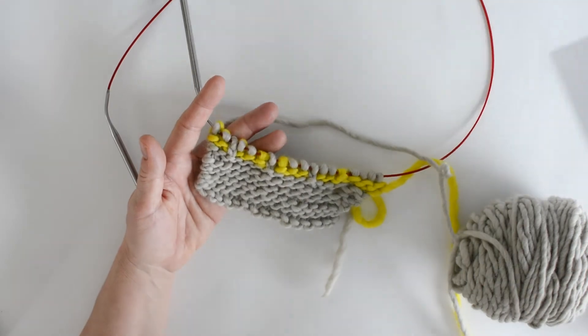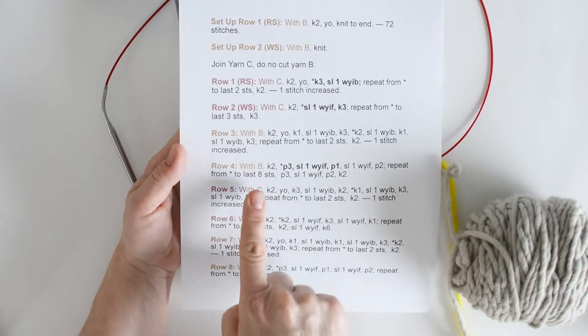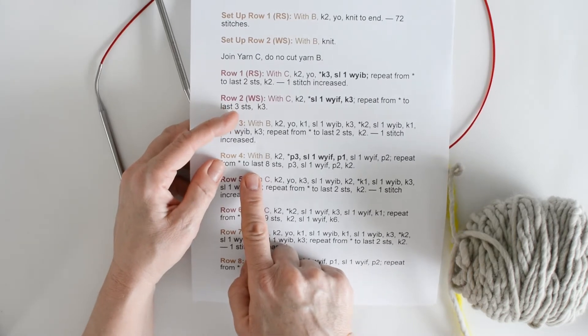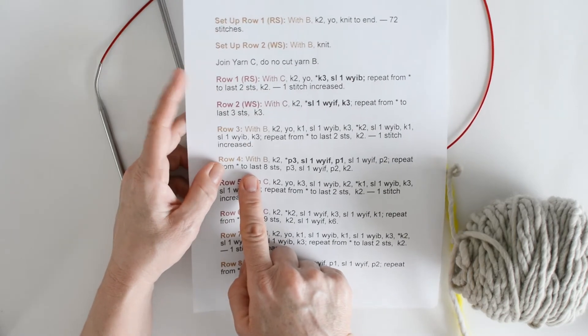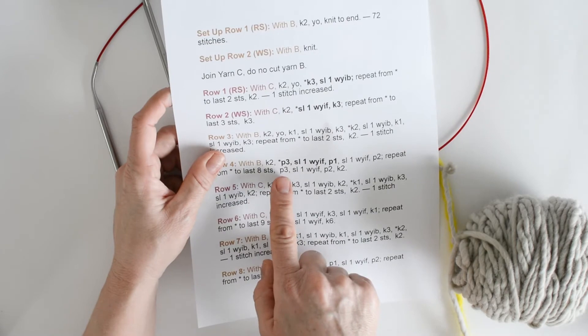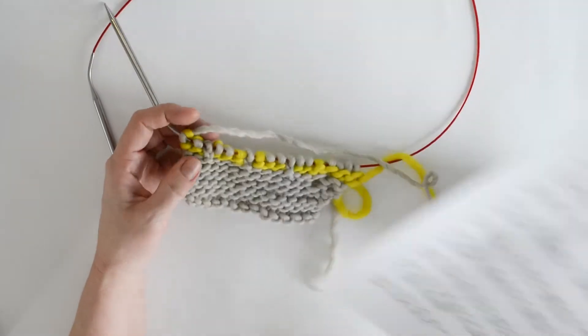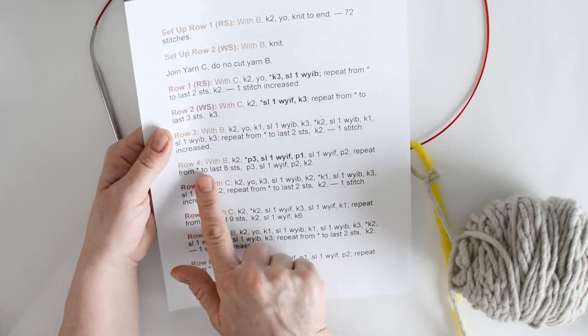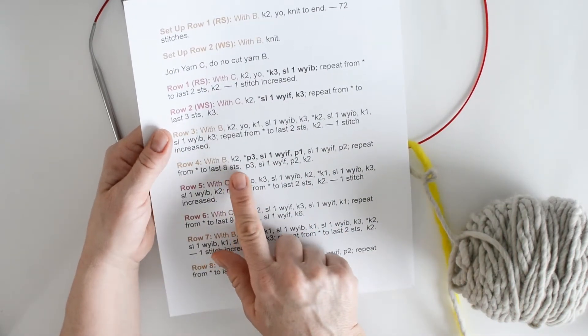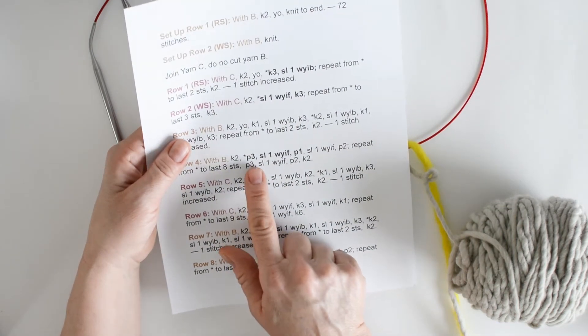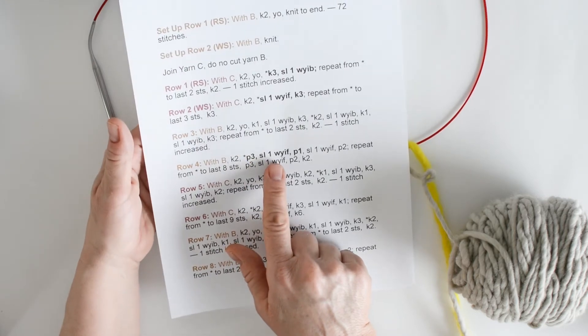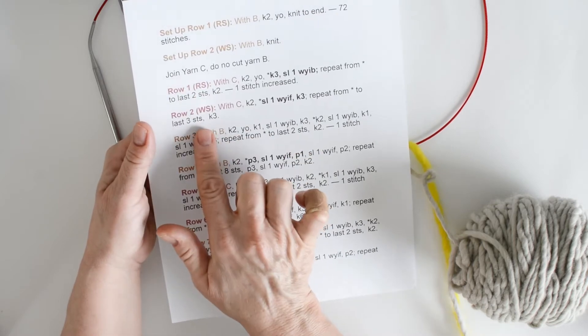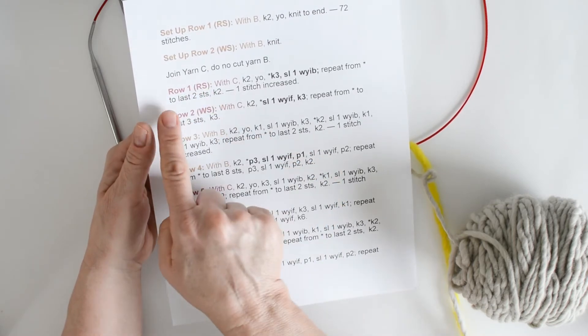Alright, I've just finished row 3, and I'm ready to begin row 4. Row 4 continues with the yellow yarn, yarn B. And we are going to, I'm sorry, yarn 4 continues with the grey yarn. I didn't even know what color I was knitting with there. Yarn B. And we are going to knit 2, purl 3, slip 1 with yarn in front. Now again, we're on a wrong side row. We know from up here, this is our key to know what's a right side and what's a wrong side.